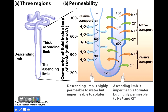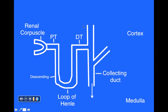We reach the bottom of the loop of Henle and then go back up the ascending limb. This region is permeable to sodium chloride but not to water, so salt exits the ascending limb. As a result, the filtrate becomes more dilute as it makes its way up the ascending limb.